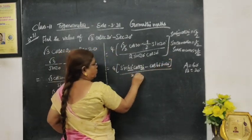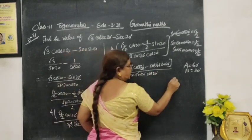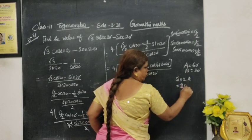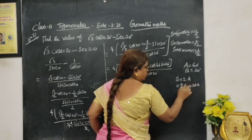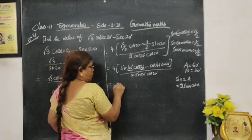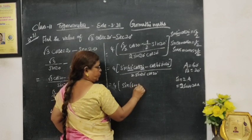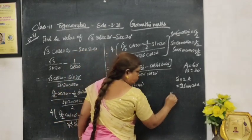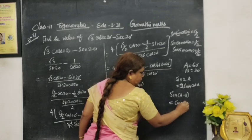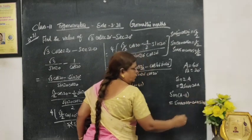This is sin 20° cos 20°. This is sin 2A formula. What is sin 2A? 2 sin A cos A. Sin 2A equals 2 sin A cos A. This is sin A - B.